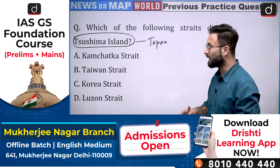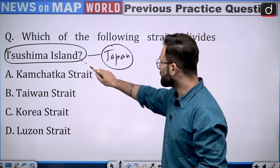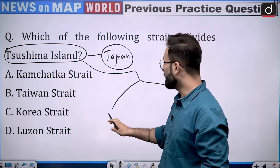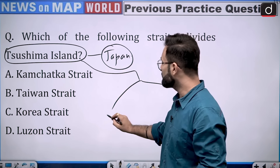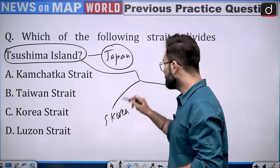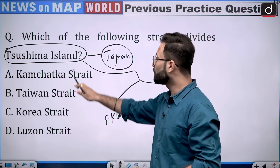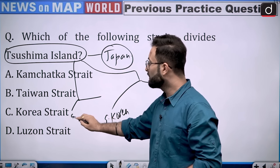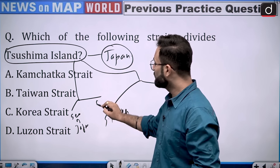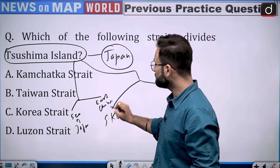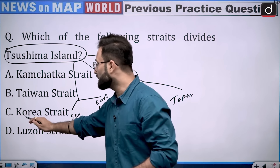When we are talking about Tsushima Island, this is an island of Japan. There are two countries when we are talking about the North and the South. In the North, it has South Korea, and in the South, it has Japan. Other than that, this island divides two water bodies: one is the Sea of Japan and second is the East China Sea. The question is which strait divides the island, and option C is your right answer — that is Korea Strait.